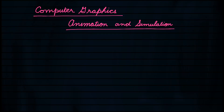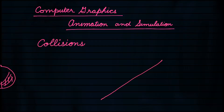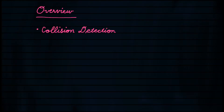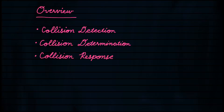Howdy! Welcome to Computer Graphics Animation and Simulation. Today we're going to talk about collisions — specifically three things: first, collision detection, which is whether a collision happened or not; secondly, determination, for finding out exactly where and when it happened; and finally, the response — what's the resulting effect and what do we do about it.